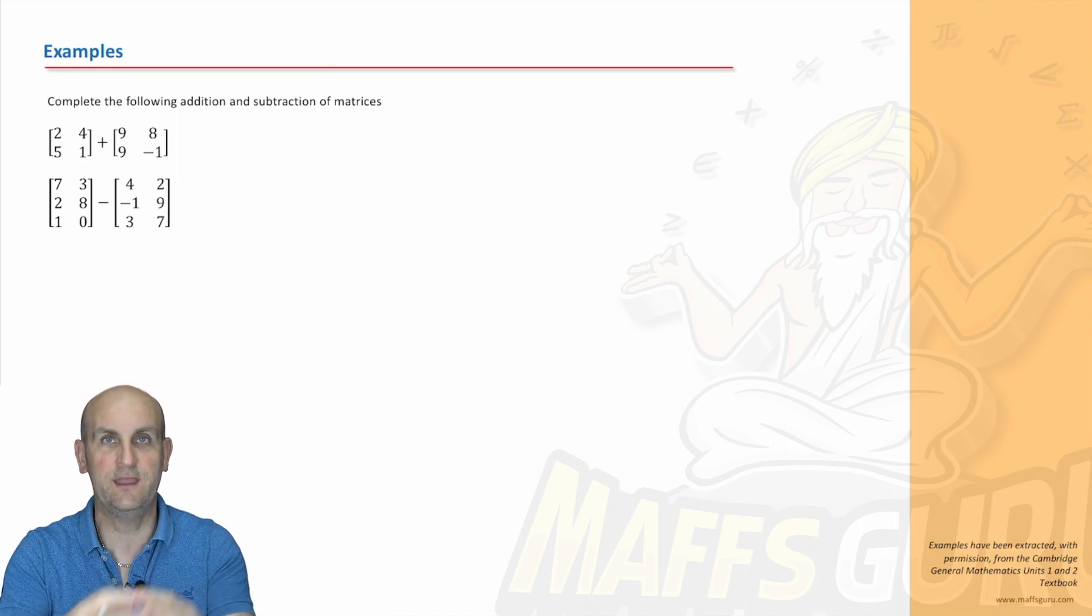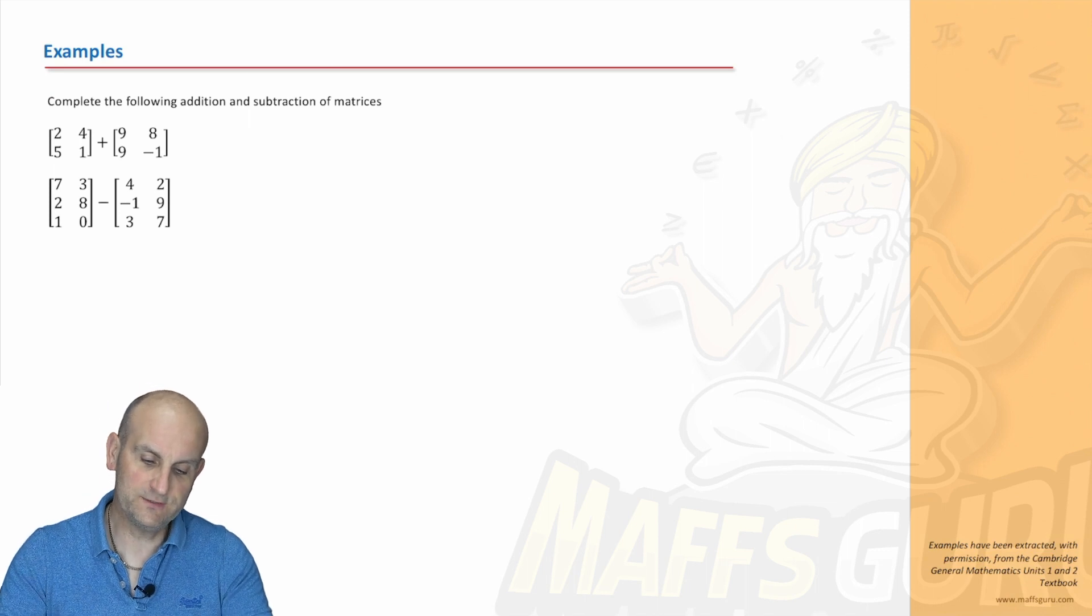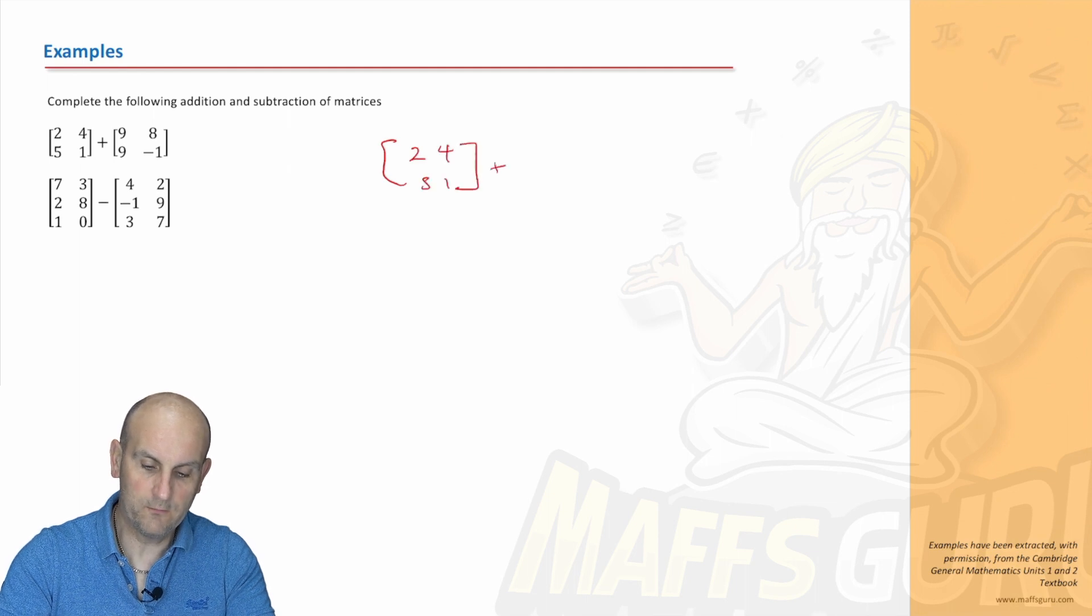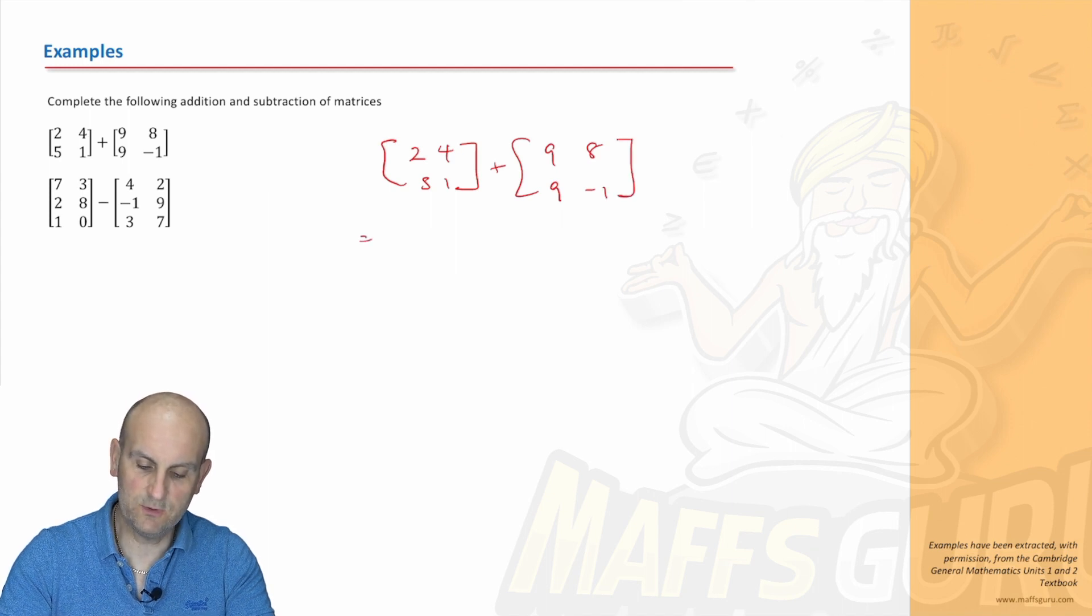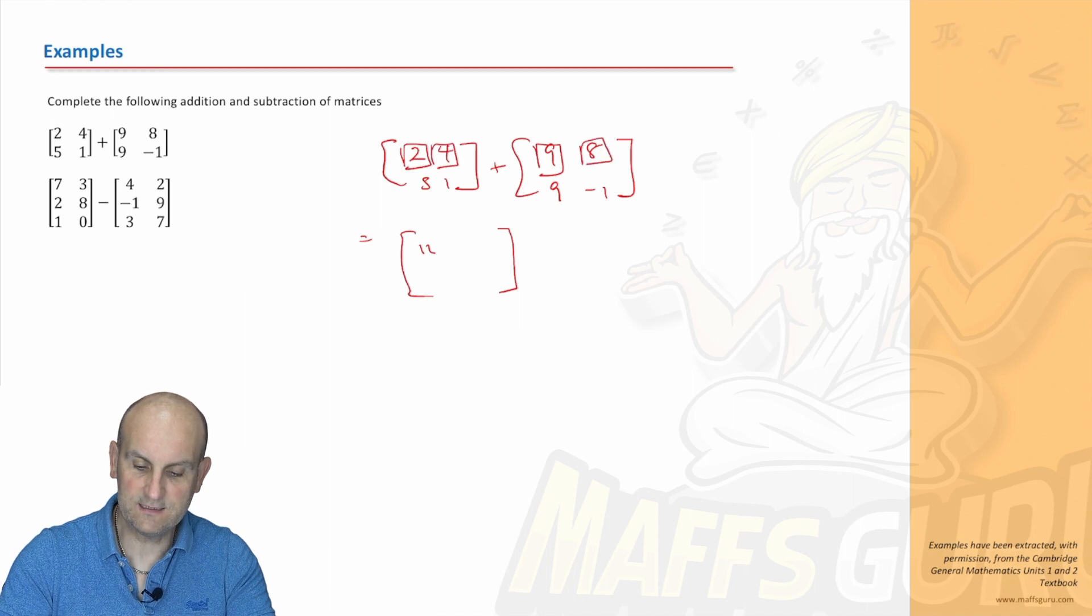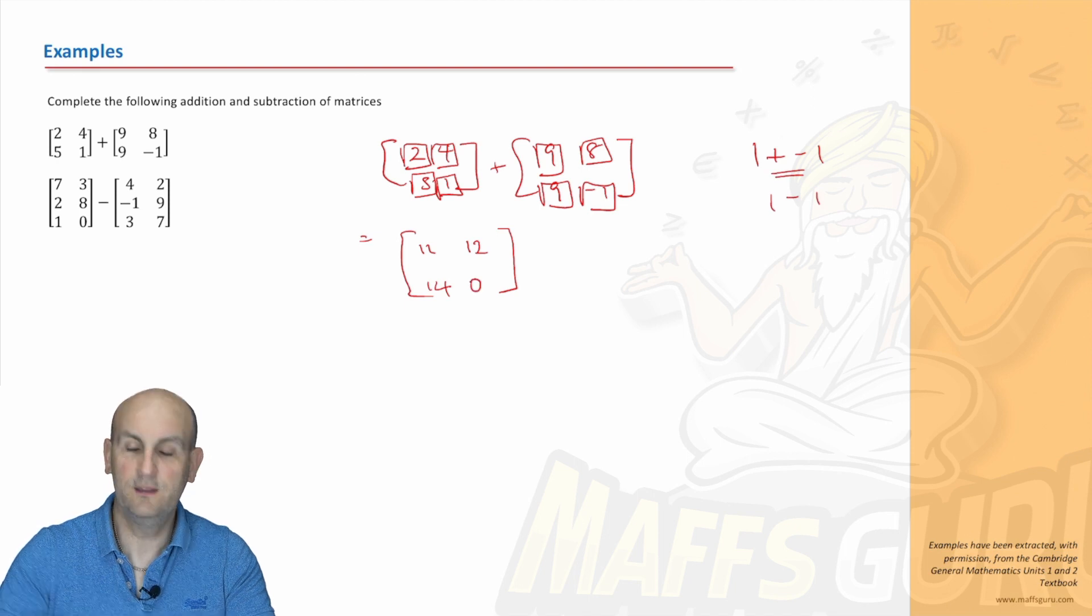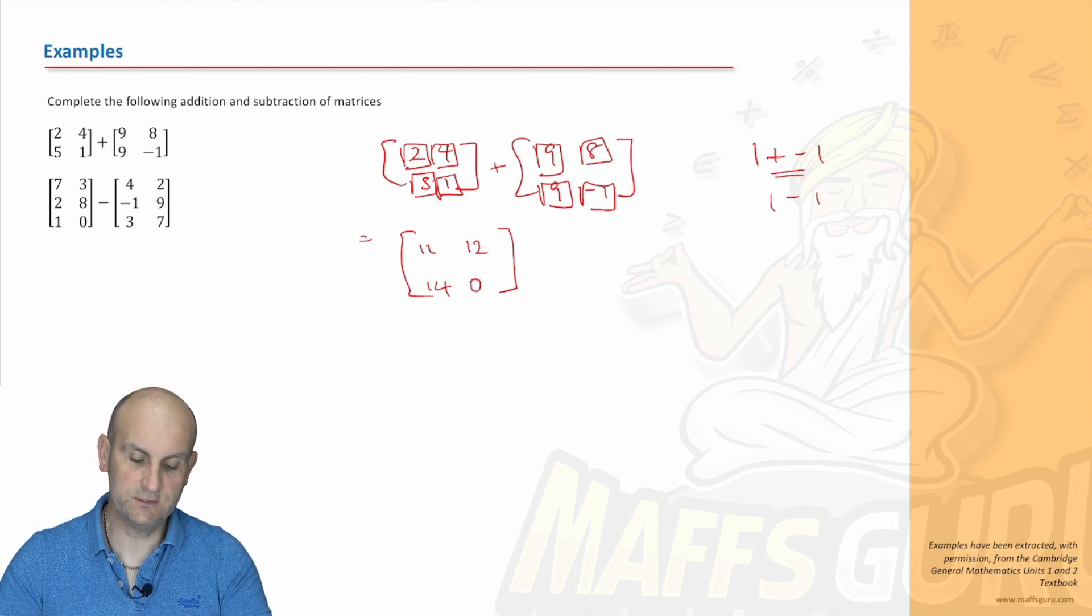Complete the following addition and subtraction of matrices. Let's just write them out again: two four five and one plus nine eight nine and minus one equals. Are they the same order? They are, so I'm going to do two plus nine gives me eleven, four plus eight gives me twelve, five plus nine gives me fourteen, and then careful - we've got one plus minus one. A plus and a minus becomes a minus, so one minus one gives me zero.